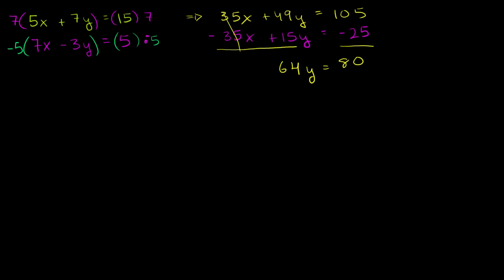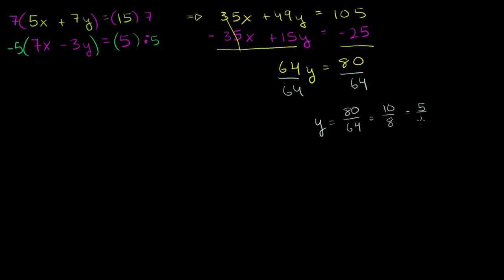Divide both sides by 64, and y equals 80 over 64. Dividing numerator and denominator by 8 gives 10 over 8, and dividing again by 2 gives 5 over 4. Equivalently, dividing straight by 16 gives 5 over 4 directly. So y equals 5 over 4.